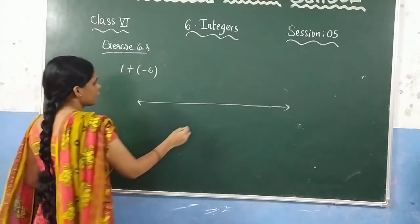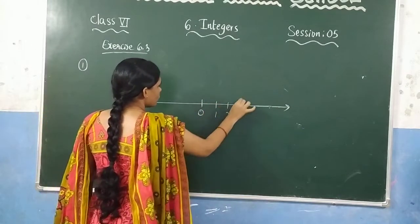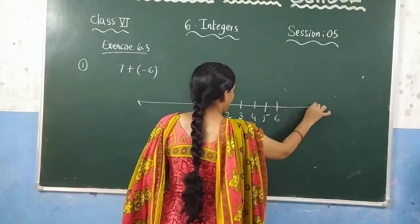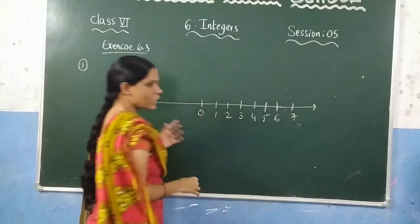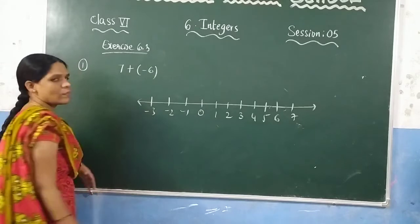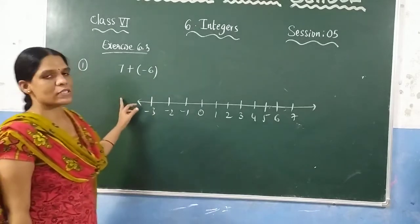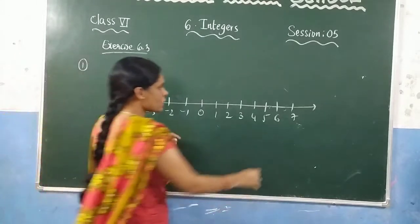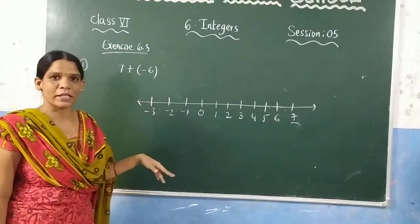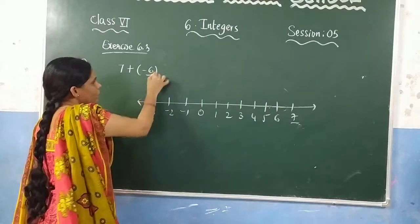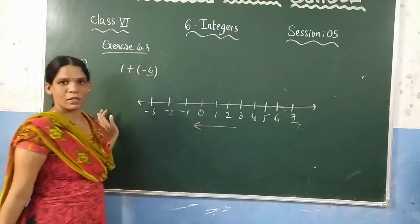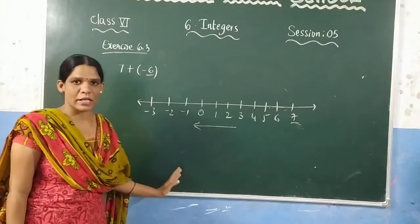Mark the numbers on the number line: 0, 1, 2, 3, 4, 5, 6, 7 to the right, and negative 1, negative 2, negative 3 to the left. The first number is 7, so go to number 7. We are adding a negative number, so move to the left side. If adding a positive number, move right.